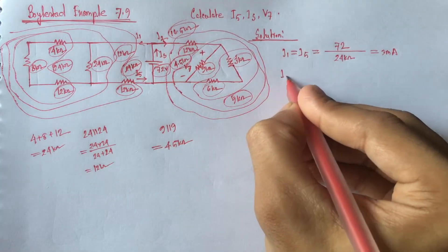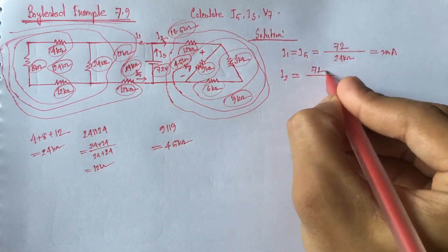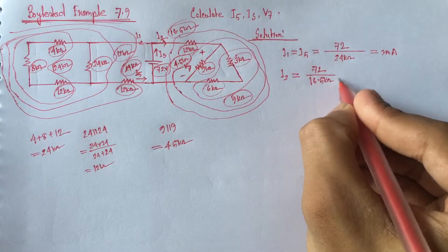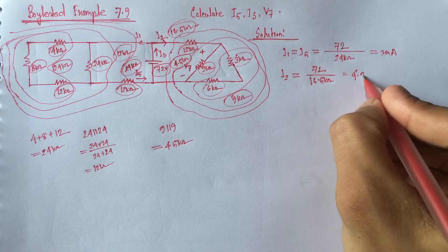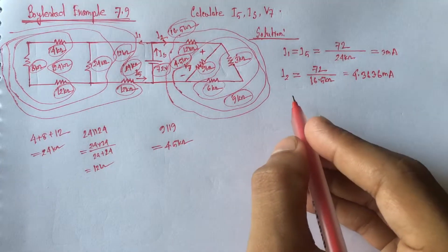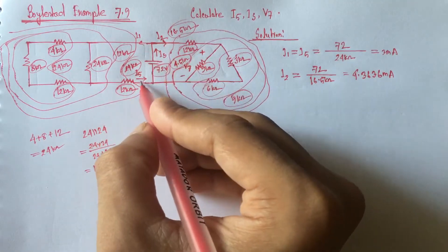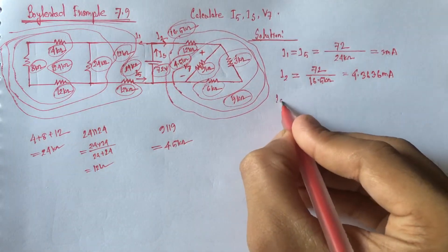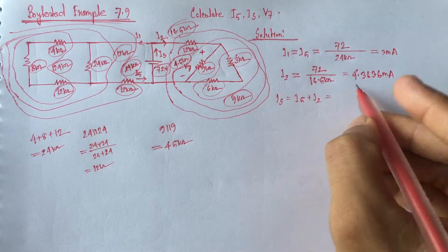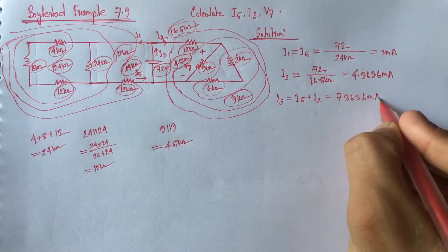From this side, if we let this current be I2, then I2 equals 72 V divided by 16.5 Kiloohm, which gives 4.3636 mA. Now IS is the combination of I1 and I2, that is I5 and I2. So IS equals I5 plus I2, which gives 7.3636 mA.